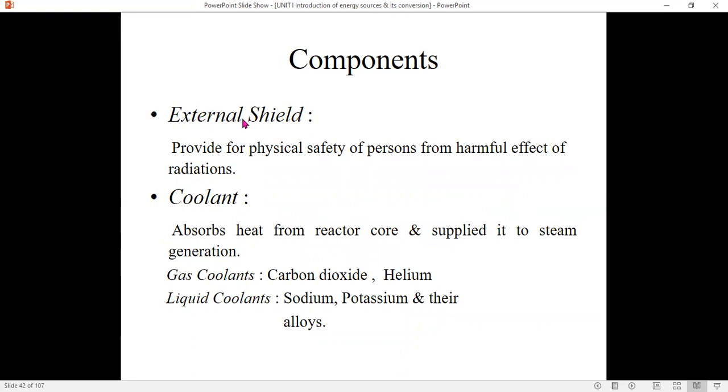We require an external shield. As I told, since it generates a lot of heat, to protect from harmful effects of radiation, we require a shield. Coolant is also required. It absorbs heat from the reactor zone and supplies it to the steam generator.